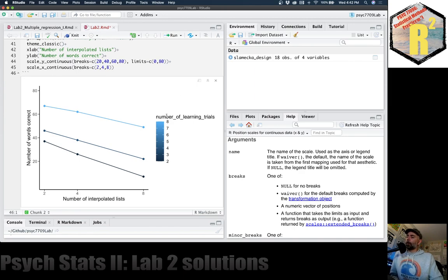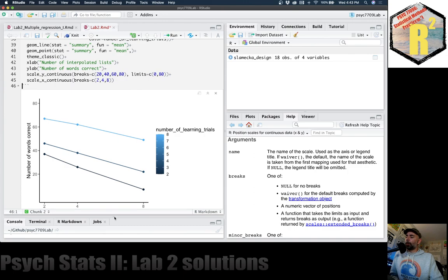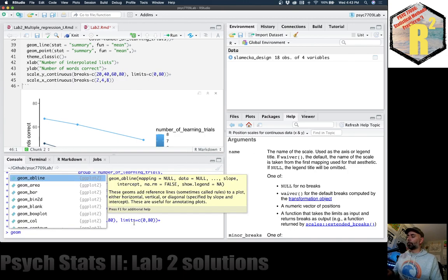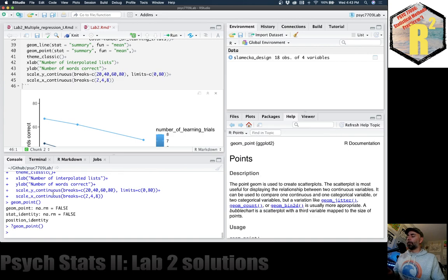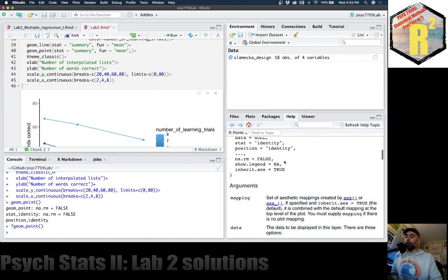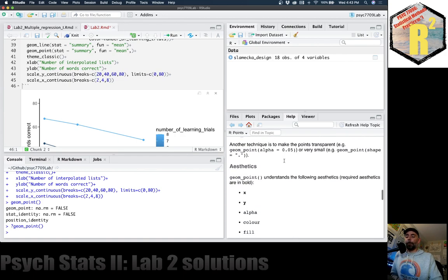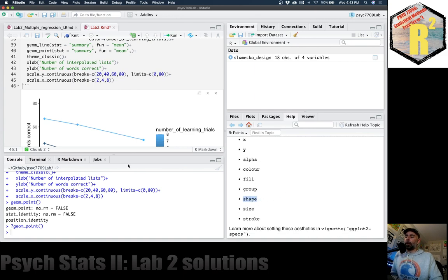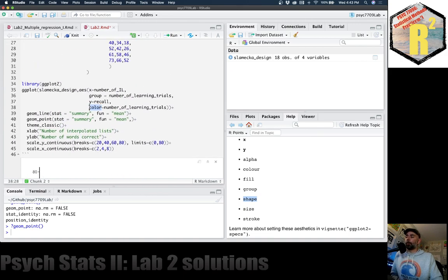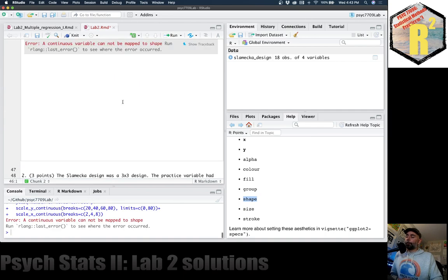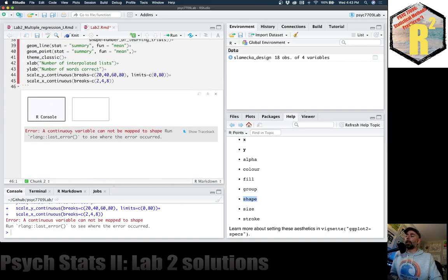Let's look at the geom_point function. Because what I might want to do is change the circles to different symbols. All right. Now, there is a feature called shape. And we can change, we can set the shape here, just like this. But watch what happens when we do that. It says a continuous variable cannot be mapped to shape. So you're out of luck.